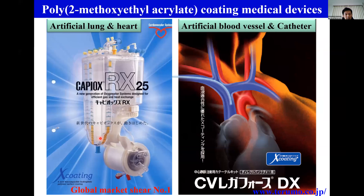Another example is artificial lung and heart, and artificial blood vessels or catheters in contact with human blood. We have been prepared with 42 methacrylate acrylic coatings for medical devices. Biocompatibility is one of the most critical issues in biomaterial design. However, the real mechanism of biocompatibility has not been understood at the molecular level.